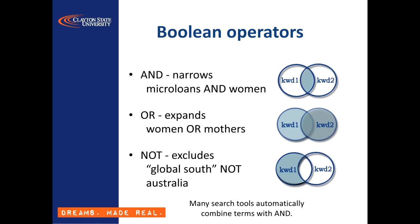AND is the most commonly used one. It returns only those results which contain both of the terms specified. For example, if the left-hand circle represents all those items containing the word microloans, and the right-hand circle all those articles containing the word women, then the shaded area in the middle is items with both words present. In many search tools, if you just put in two terms without any operator connecting them, the search defaults to AND-ing them together. You can see that the results are narrower than what you'd get by searching either term in isolation.